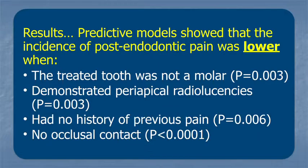The results were interesting. The predictive model showed that the incidence of post-endodontic pain was lower when the treated tooth was not a molar. We can assume that the size of the tooth and the number of roots and root canals were a factor in the reasoning of why molars caused more of a problem than did a single-rooted tooth.